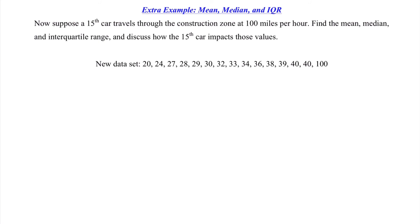I'm going to find the median first. Underlining the bottom half and top half of the data, since we now have 15 cars, the median is simply the middle value, which is 33 — we don't need to average two middle values since we have an odd number. For Q1, the median of the bottom half, we have seven pieces of data in the bottom half, and since it's odd we take the middle value, which is 28. So Q1 is 28. For Q3, the median of the top half, we again have seven observations, so we take the middle value, giving us Q3 of 39.